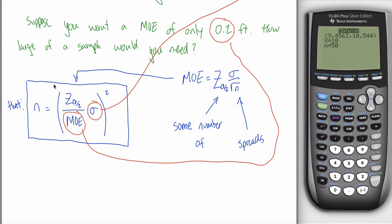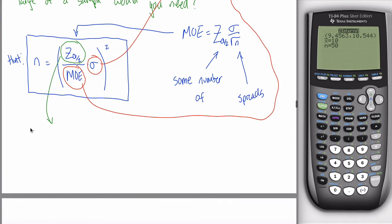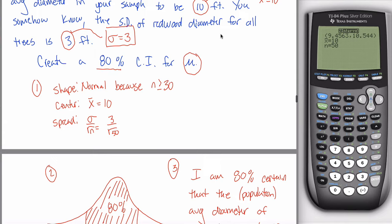Figuring out Z_(α/2) is a little bit of work, but I'll do a couple of examples you can follow. First, I need to tell you what alpha is. Alpha is a Greek letter — it's always equal to 1 minus your level of confidence, always, 100% of the time.